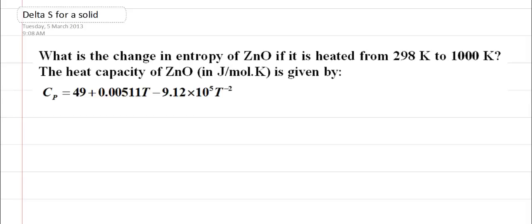Okay, so this is a quick example to look at the change in entropy for heating a solid. What we've got here is zinc oxide and it's being heated from 298 Kelvin to 1000 degrees Kelvin.